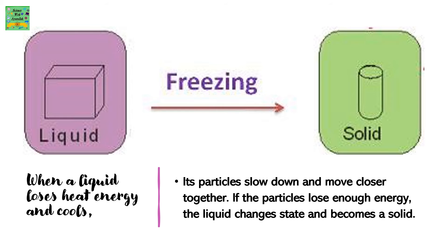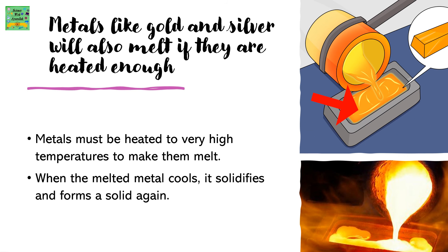When a liquid loses heat energy and cools, its particles slow down and move closer together. If the particles lose enough energy, the liquid changes state and becomes a solid. Metals like gold and silver will also melt if they are heated enough. Metals must be heated to a very high temperature to make them melt. When the melted metal cools, it solidifies and forms a solid again.